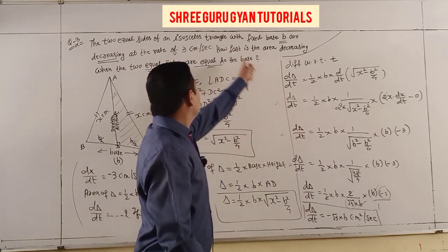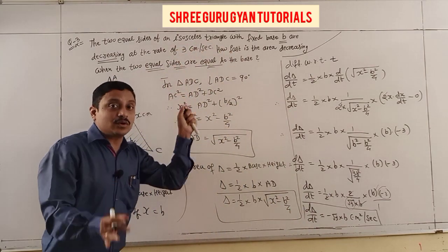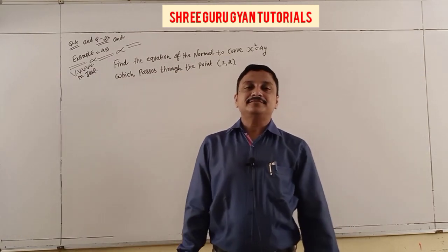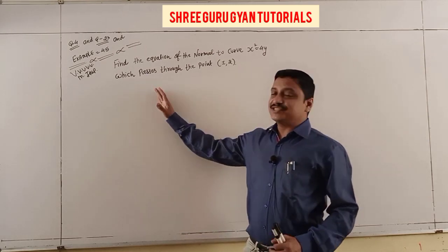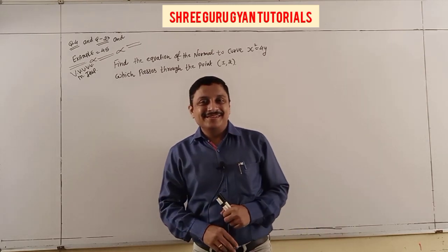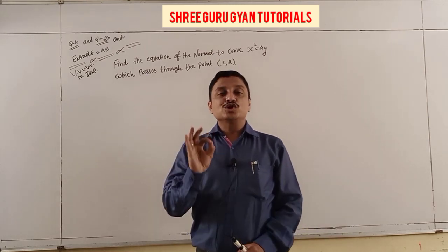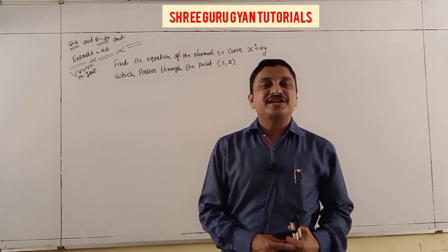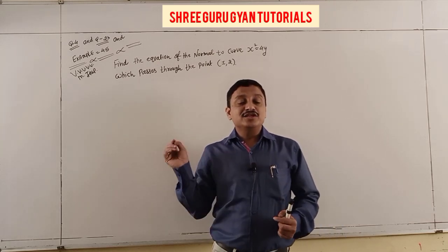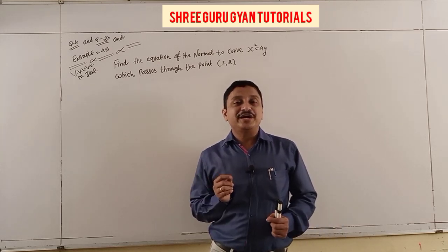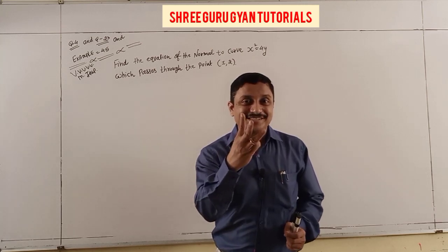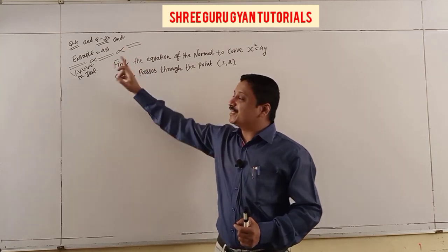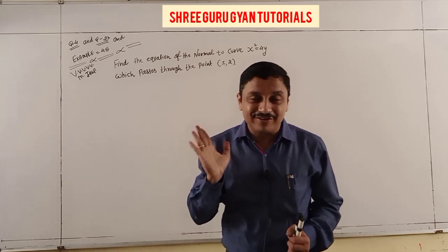That's the answer. Now continuing with one more question — Question 4, an example 45, which is a most important numerical asked many times in final exams, printed in the textbook 3 times.